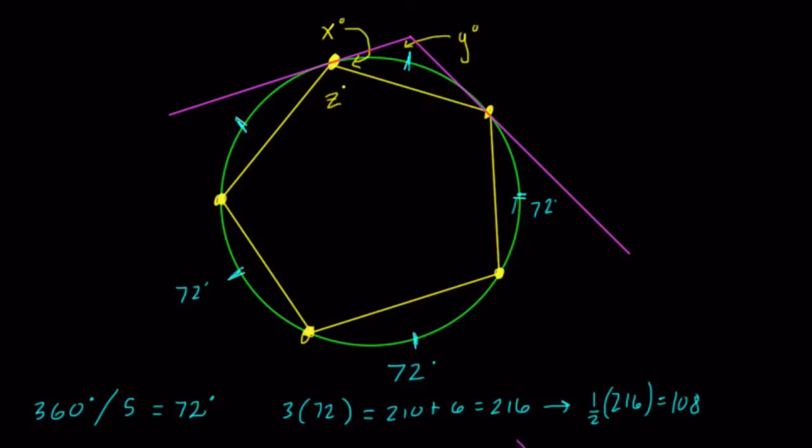So angle Z equals 108 degrees. These two purple lines that help form angles X and Y are both tangent lines. So now we have tangent chord angles. Let's deal with angle X first. Angle X is a tangent chord angle.